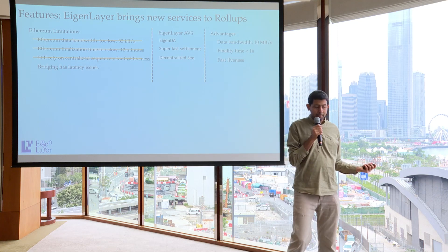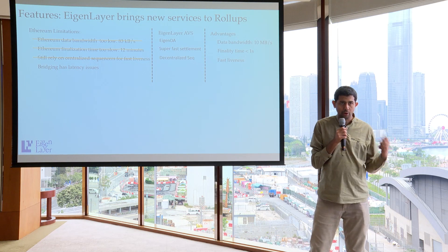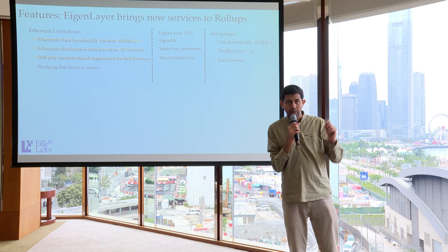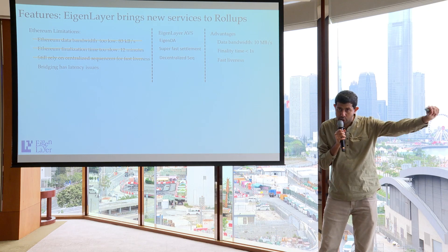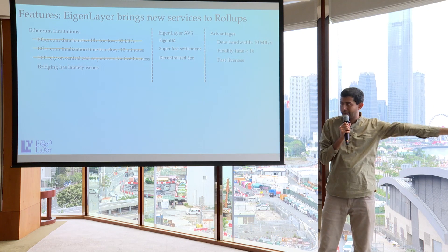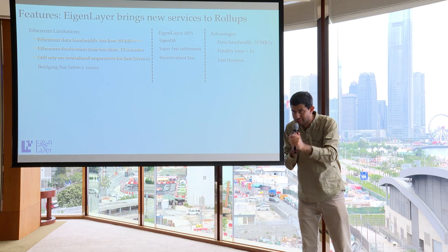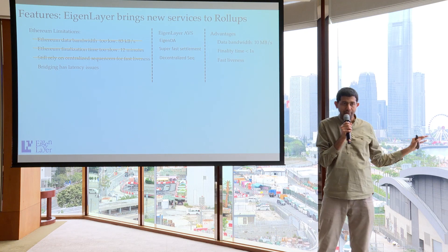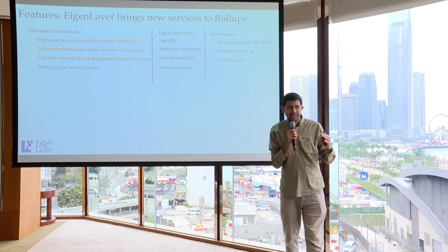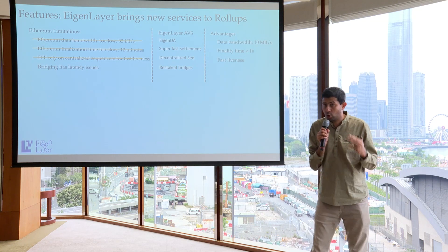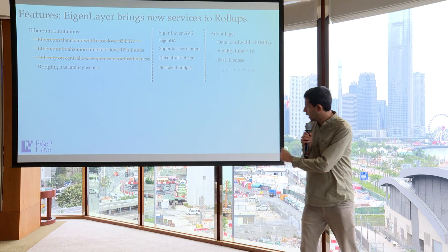Bridging is a big problem in rollups — to bridge from one rollup to another can take a long time. You have to settle your rollup to Ethereum, which takes seven days. But if you have enough economic assurance that a rollup has done things correctly, you can use that certificate to move value around rollups instantly, not after seven days. So lots of new restaked bridges are coming up, giving you both the full security of being an Ethereum layer 2 while providing instant confirmations.